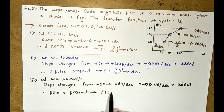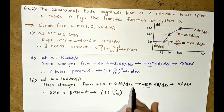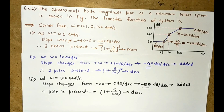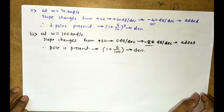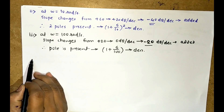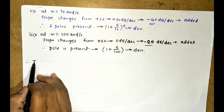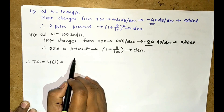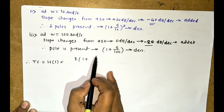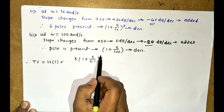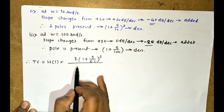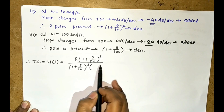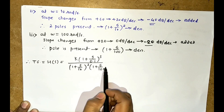Since minus 20 dB per decade is added, a simple pole is present at corner frequency 100 radian per second. So (1 + S/100) is noted at the denominator. The standard form of the transfer function H(S) has zeros at the numerator and poles at the denominator: K·(1 + S/0.1)³ divided by (1 + S/10)²·(1 + S/100).